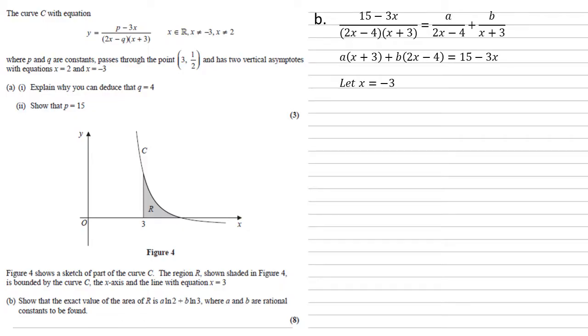Now if we set x equal to minus 3, this means that in the first bracket with the a we get a times 0, so it cancels out the a, which then leaves us with b, lots of 2 times negative 3 minus 4 equals 15 minus 3 times negative 3. So minus 10b equals 24 and b equals minus 2.4.